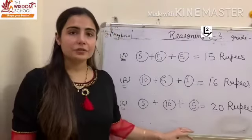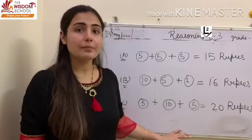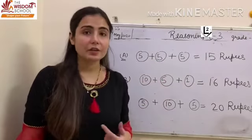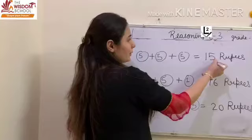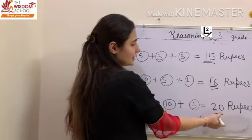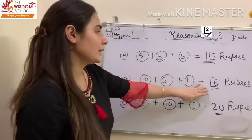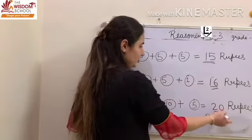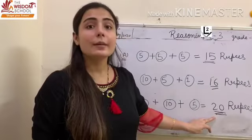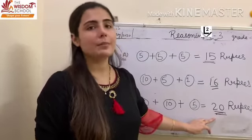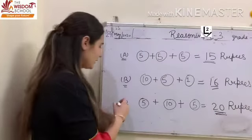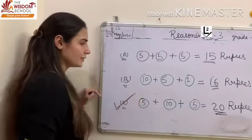Now the next step is to find the maximum money. Out of options A, B, and C, we check the numbers: option A has 15, option B has 16, and option C has 20. Which is the bigger number? 20. So the amount of 20 rupees is the bigger or maximum amount. So 20 will be the answer, which means our option C is the correct answer.